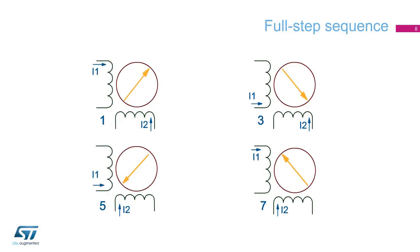Continuing the step sequence in the 1-3-5-7 order causes the motor to rotate in the forward direction, and reversing the order to 7-5-3-1 will cause the motor to rotate in the reverse direction. This drive sequence is commonly referred to as full step, since each change in the current moves the motor one step. For our simple motor with one pole pair on the rotor, there are four steps per revolution, and one electrical cycle completes one revolution. Real stepper motors have many more steps per revolution. One common configuration has 7.5-degree steps, which corresponds to 50 steps per revolution for a 12-pole pair motor, requiring 12 electrical cycles per mechanical revolution. Another common configuration is 1.8 degrees per step, with 200 steps per revolution and 25 pole pairs, requiring 25 electrical cycles per revolution.